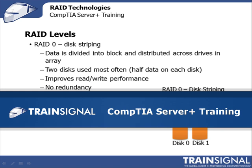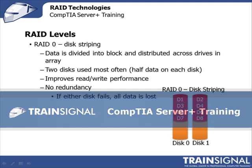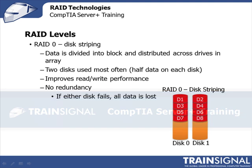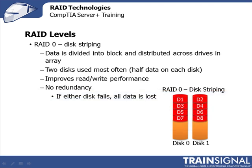Hi, this is Veronica Henry. This demo on RAID levels is from my CompTIA Server Plus course. RAID 0 is called Disk Striping, and under this scheme, data is divided into blocks and distributed across all the drives in the array.